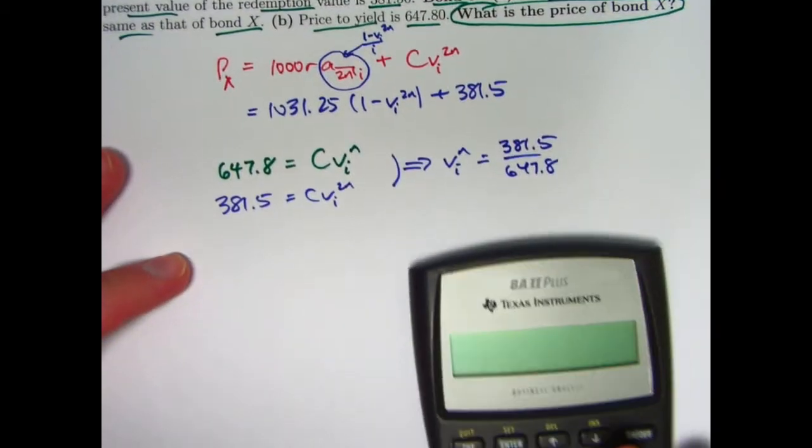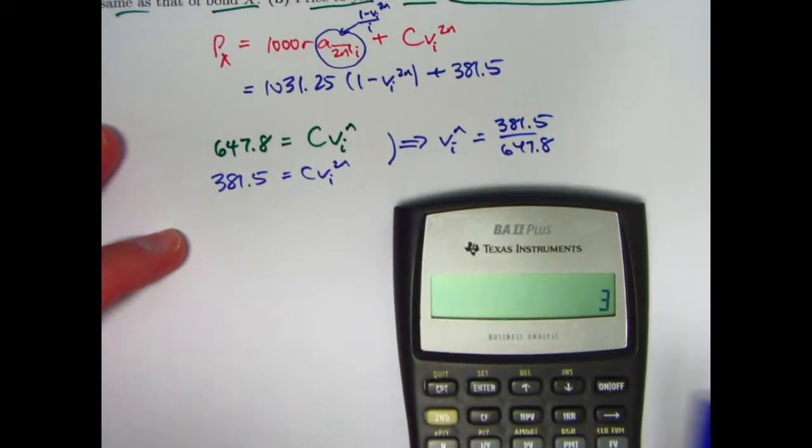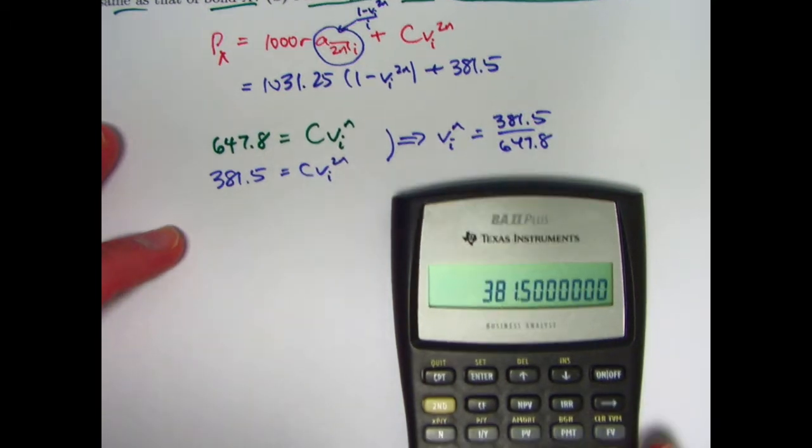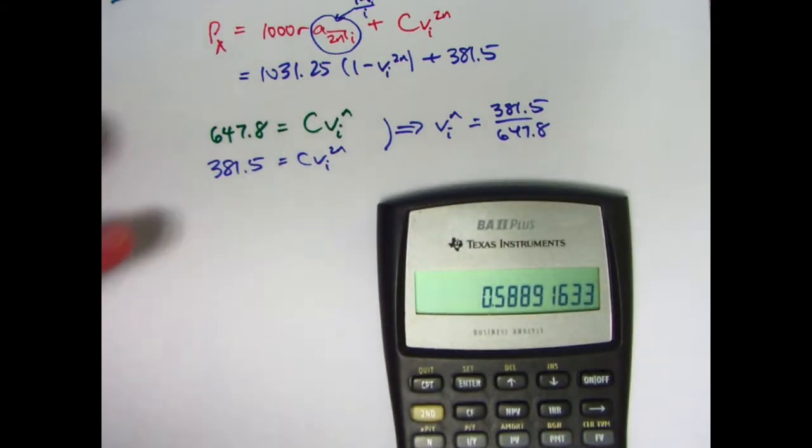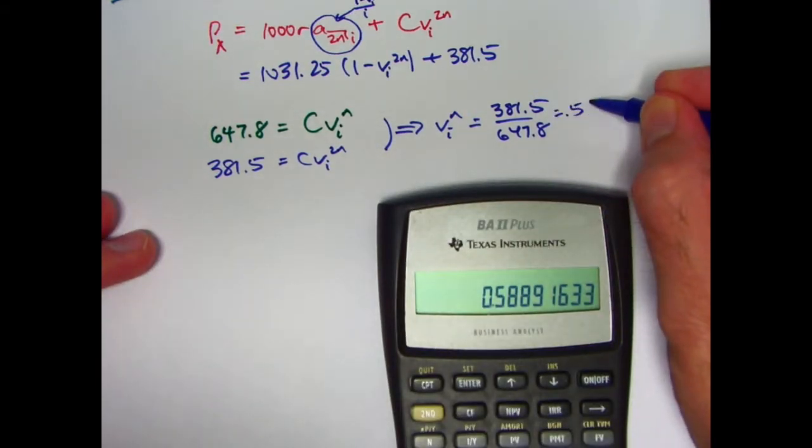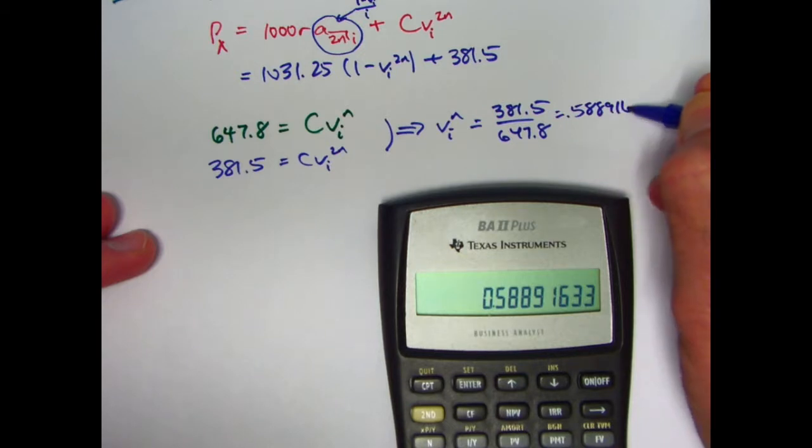What does this come out to be? 381.5 divided by 647.8. That's 0.58891633.